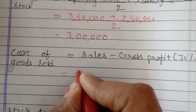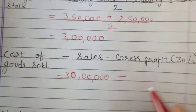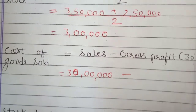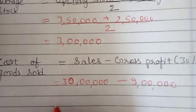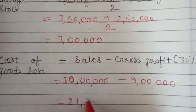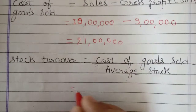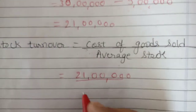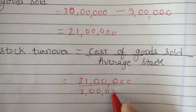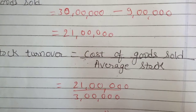Cost of goods sold equals sales minus gross profit. Sales are Rs. 30,00,000, and gross profit at 30% of Rs. 30,00,000 is Rs. 9,00,000. So cost of goods sold is Rs. 30,00,000 minus Rs. 9,00,000 equals Rs. 21,00,000. Stock turnover ratio equals cost of goods sold upon average stock: Rs. 21,00,000 divided by Rs. 3,00,000 equals 7 times.